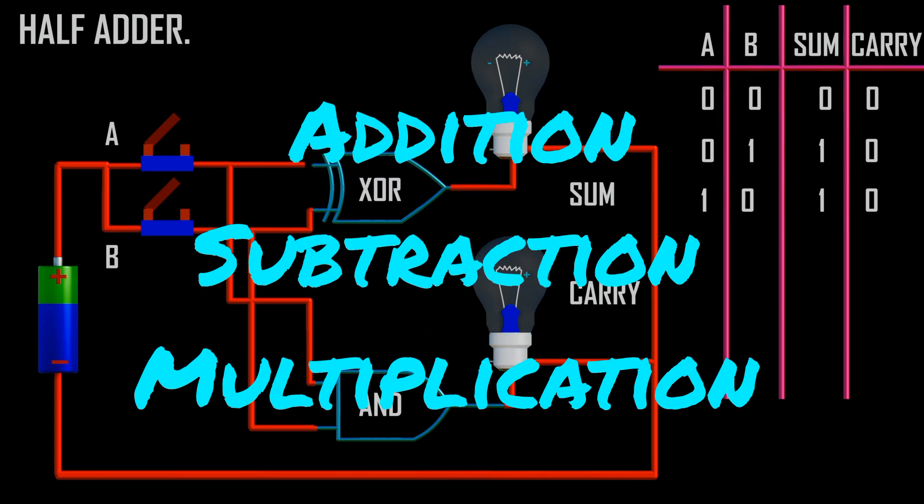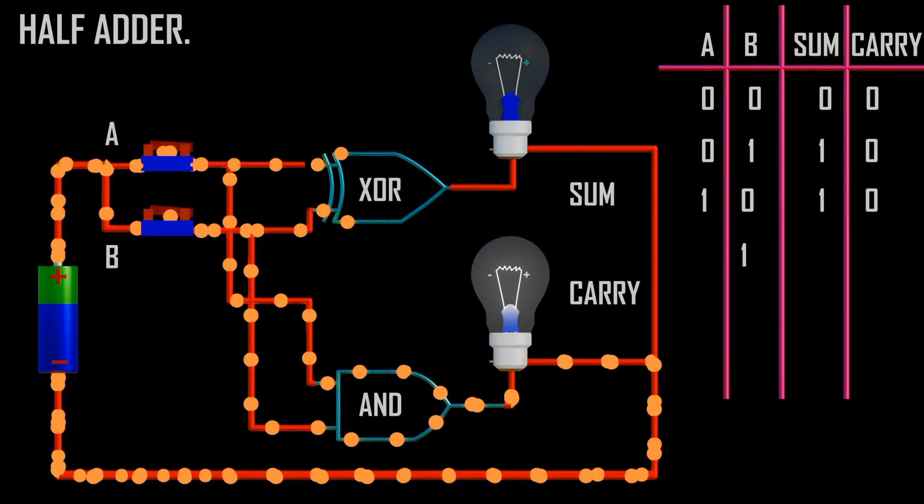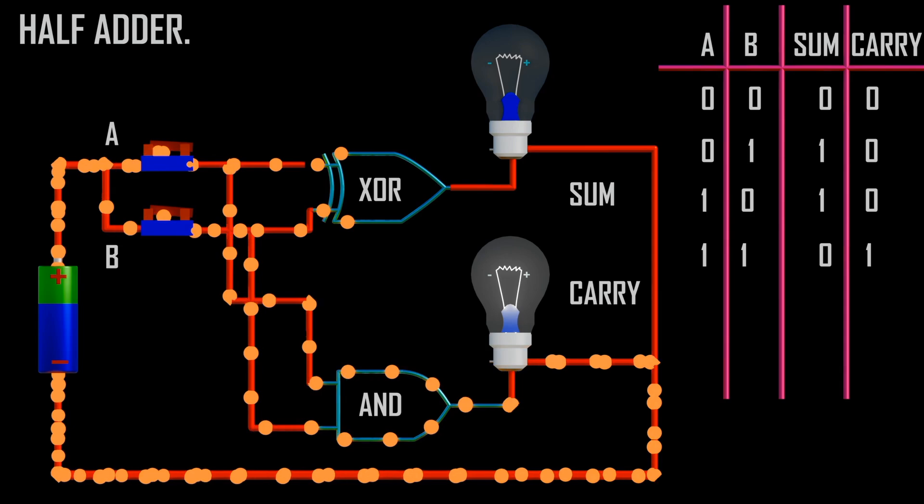Such as addition, subtraction, multiplication, and the rest. Here a basic half adder that can add two numbers is formed using XOR gate and AND gate.